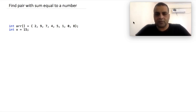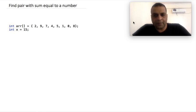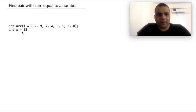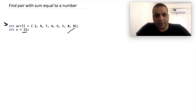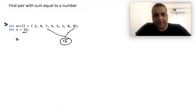Hi guys, my name is Kamal Rawat and in this video we are trying to solve this interview problem. The problem is that we are given an array and a number X; we want to find if there exists a pair inside the array whose sum is equal to X. For example, if the given array is this and X is 15, then the pair exists because 8 plus 7 is equal to 15. But if X is equal to 18, then our answer should be no because no pair exists whose sum is equal to 18.